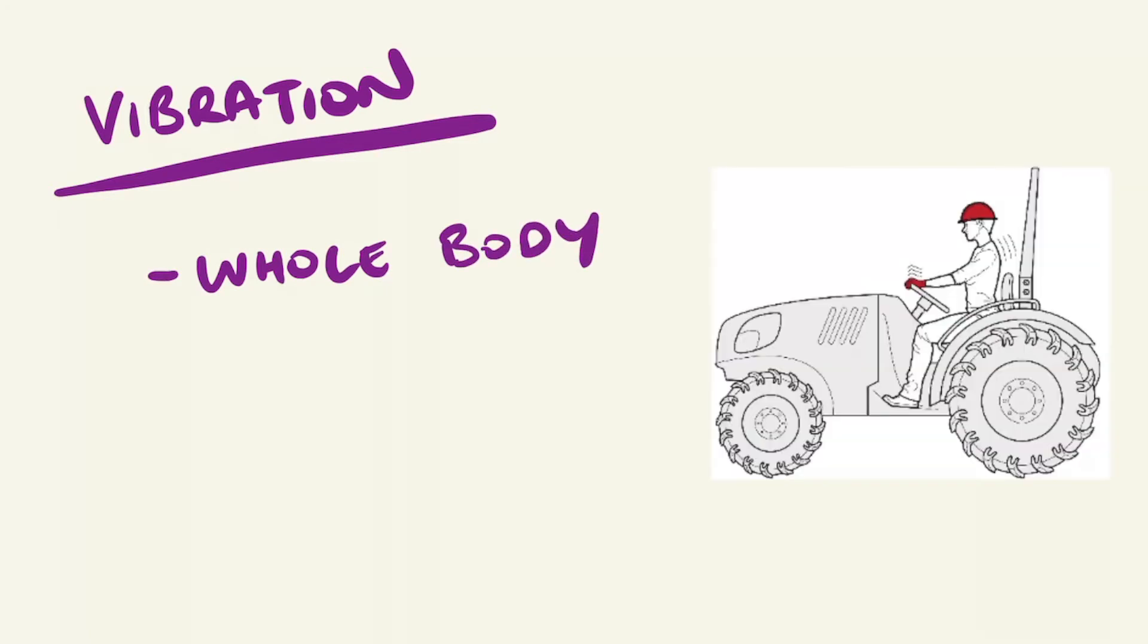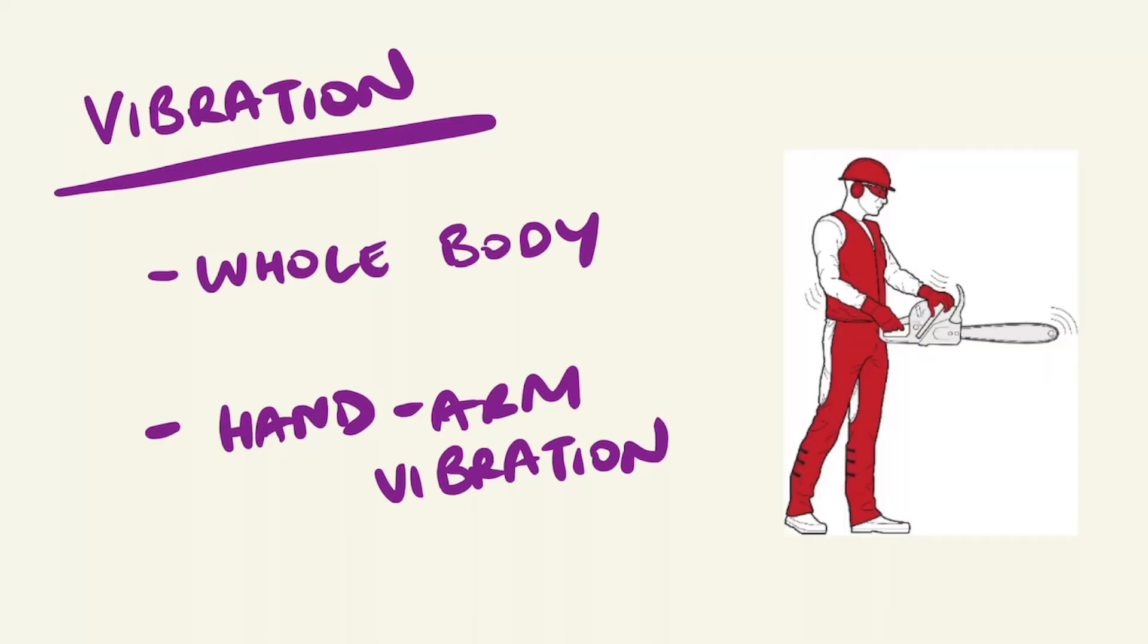Vibration. Whole body vibration is when vibration that is created is transmitted through the entire body, such as an operator sitting in a heavy tractor. Hand arm vibration describes transmission of vibrations from a machinery tool to the hands operating it. For example, working with chainsaws or jackhammers.